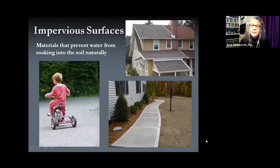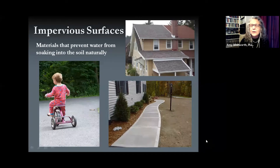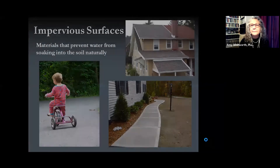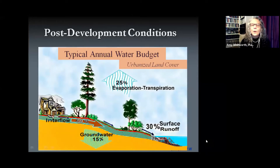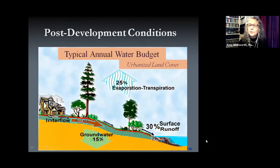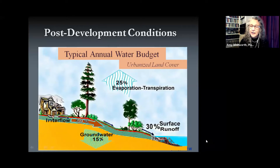With development, we remove trees, compact the soil with building, construct houses and hardscapes, and all of those things prevent water from being absorbed into the soil, leading to more runoff more quickly. In post-development conditions, there are far fewer trees, soil is no longer that spongy forest duff layer — it's compacted — we have lawns and fewer plants. Now we have 100% more surface runoff than in pre-development times, less evaporation, more runoff, and a lot less purification.